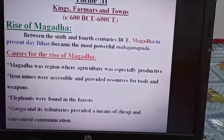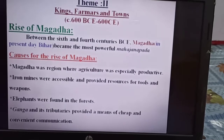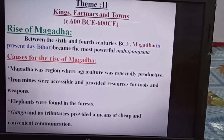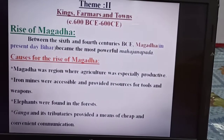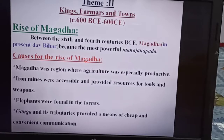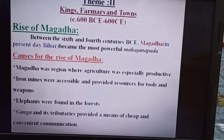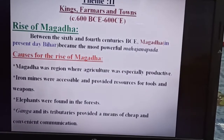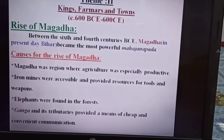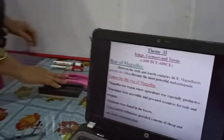The next point is that elephants were found in the forests, and the Ganga and its tributaries provided a means of cheap and convenient communication.